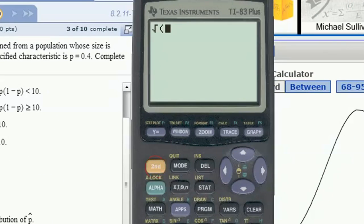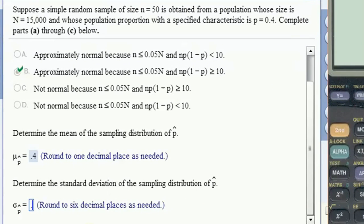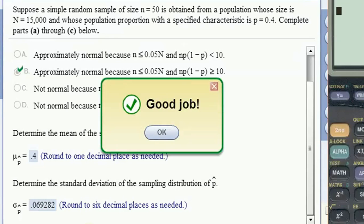The standard deviation follows a formula. It's going to be the square root of the population proportion times 1 minus the population proportion divided by the sample size. So everything, it's the square root of that whole thing. And that is the standard deviation of the sample proportion, 0.069282. We need the six decimal places. So there you go, six decimal places.